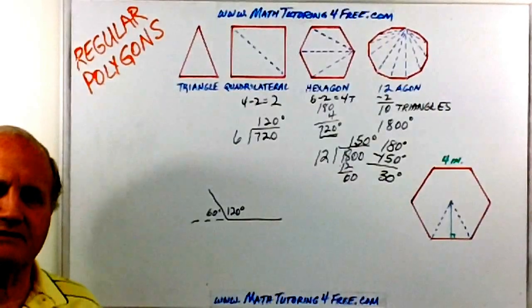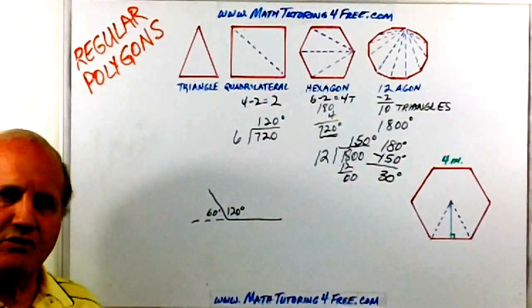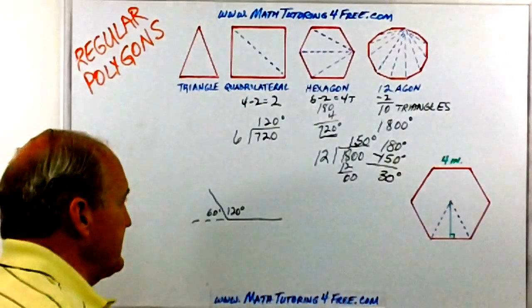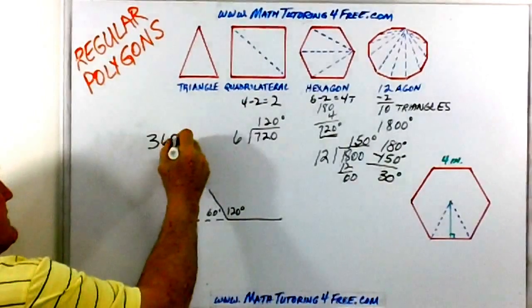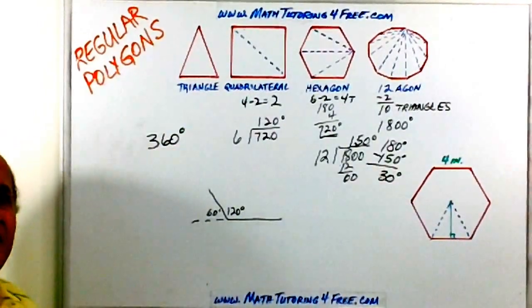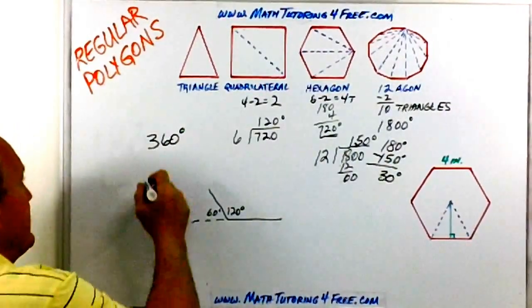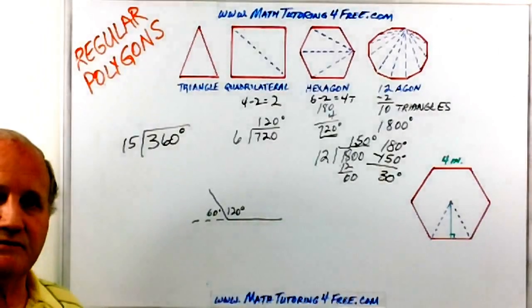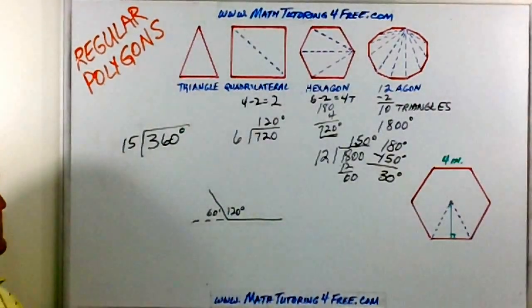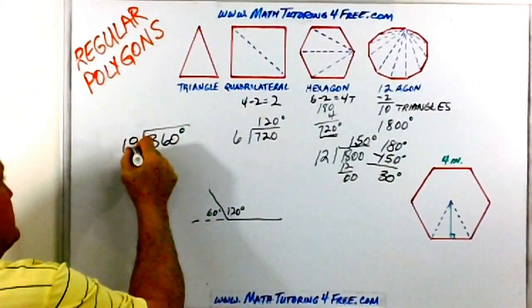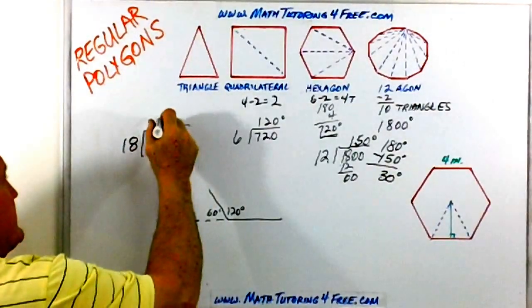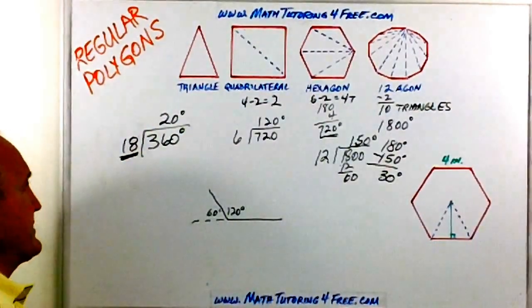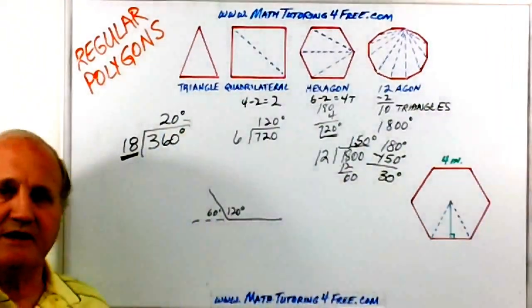One thing to remember about external angles: no matter how many sides there are, the total of all external angles going all the way around is always 360 degrees, just as it is for a circle. So another way to calculate the external angle is to divide 360 by the number of sides. For an 18-sided regular polygon, 360 divided by 18 gives 20 degrees as the external angle.